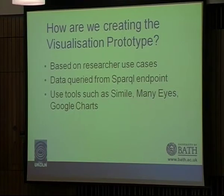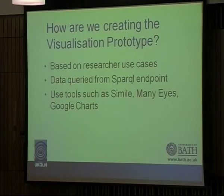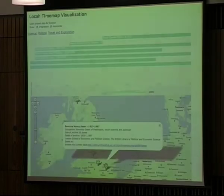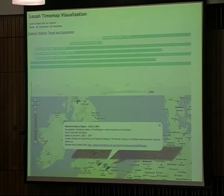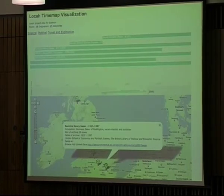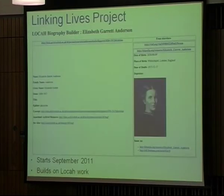On to the visualization prototypes. We had some simple use cases — not a thorough process really. But our visualization takes data from the SPARQL endpoint, and we used various off-the-shelf tools rather than building our own software. At the top is a timeline — the length of the green line effectively represents the length of time the archive covers. If you're interested in one, say Bertie Nancy Sear, you click on that and it brings up a box and a map pin. With archives, because they're physical things, where they are is important.